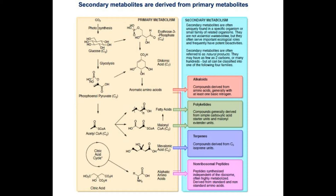There are four classes of secondary metabolic compounds: alkaloids, polyketides, terpenes, and non-ribosomal peptides. They may often be uniquely found in a specific organism or a small family of related organisms. They are not essential, but they often serve important ecological roles.